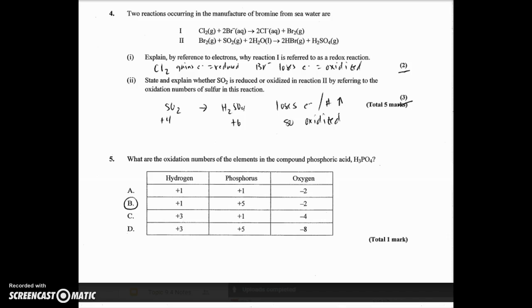So number 4 is the first question from paper 2, the first free response. People did pretty well on this. It says two reactions occur in the manufacture of bromine from seawater. Our chlorine gas reacts with bromine ion to form chlorine ion and bromine. So chlorine is gaining electrons. That's what nonmetals do. And the bromine ion has to be losing those electrons. So it says, explain by reference to electrons. Now this is where they were picky about getting your full two points, is you had to talk about the electrons.